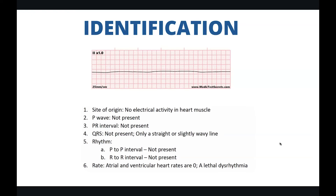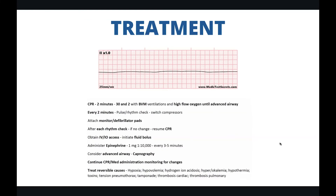This is obviously a lethal dysrhythmia. Treatment for asystole is going to be the same as treatment for PEA. Do CPR with BVM ventilations and high flow oxygen. Every two minutes, do a pulse and rhythm check and get that monitor applied. After each rhythm check, if there's no change, resume CPR and get IV/IO access. Initiate fluids and do epinephrine 1 milligram of 1 to 10,000 every three to five minutes. Consider an advanced airway with waveform capnography. Continue this cycle of CPR and med administration, and treat reversible causes.